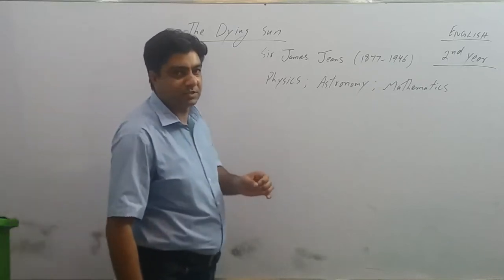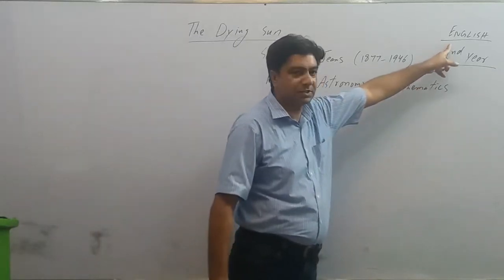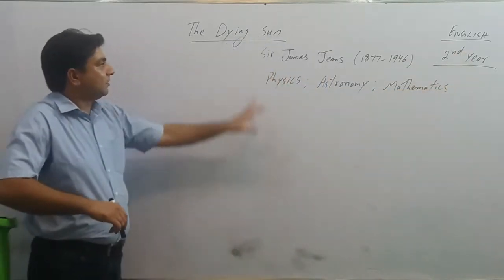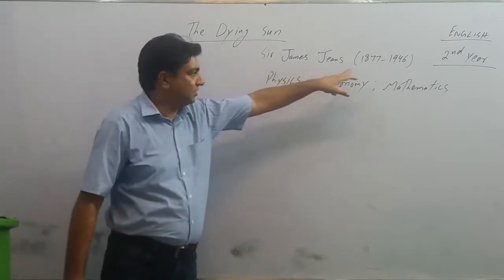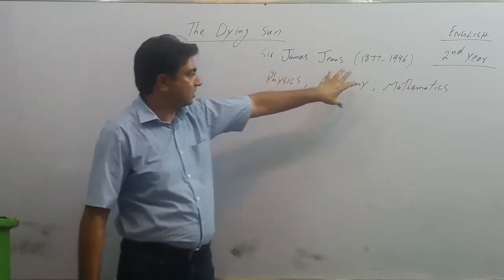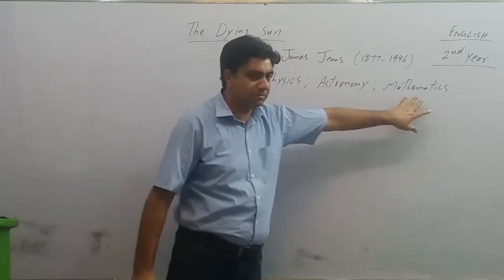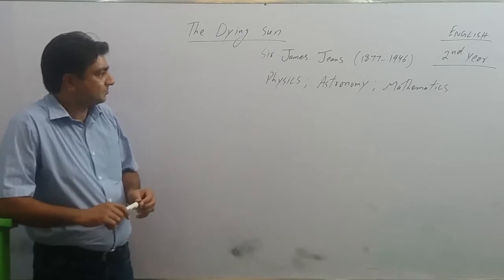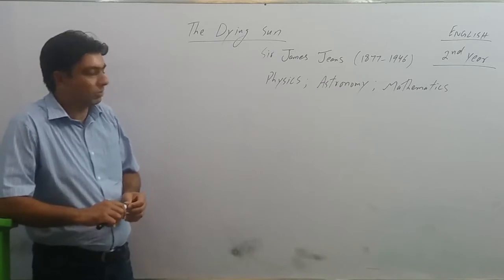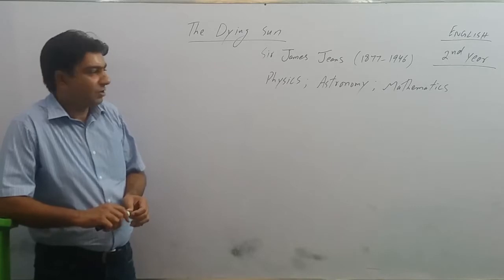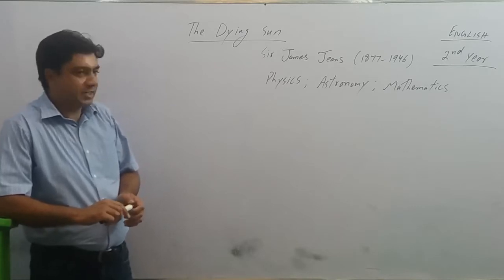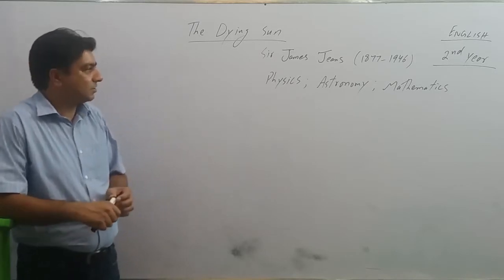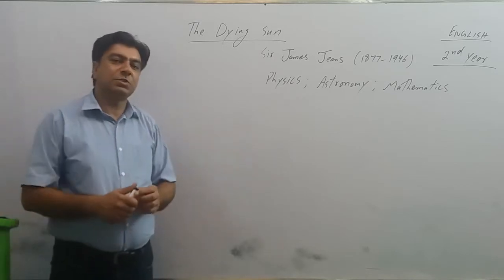Assalamu alaikum students, this is Bilal Adal for English second year, intermediate part 2. The first lesson is 'The Dying Sun' by Sir James Jeans, a British physicist, astronomer, and mathematician. What is this universe? Who created it? What is its nature and purpose? What is the age of this universe?